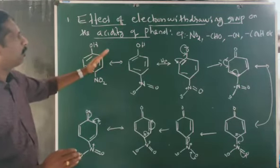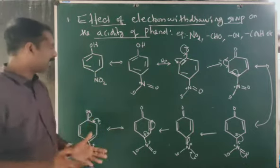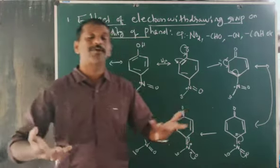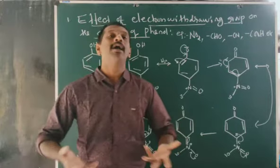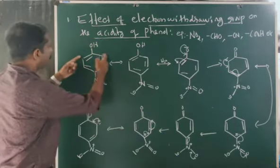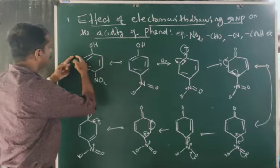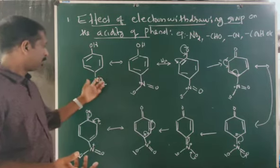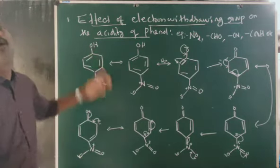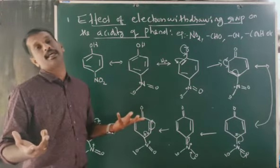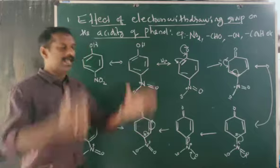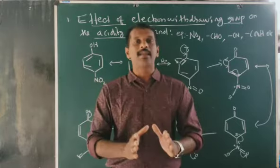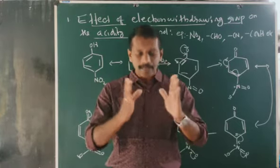This is the effect of the electron withdrawing group. As the number of electron withdrawing groups increases, the acidity will also increase. That means if there are more NO2 groups present on the ring, the compound will become a stronger acid than nitrophenol. As the number of electron withdrawing groups increases, the acidity increases. Keep in mind: when an electron withdrawing group is present on the phenolic ring, it will become more acidic than phenol.